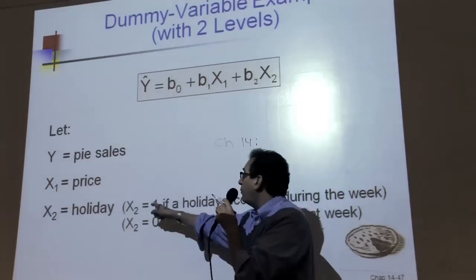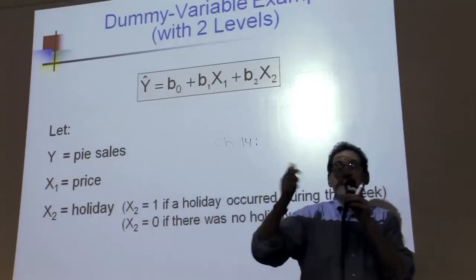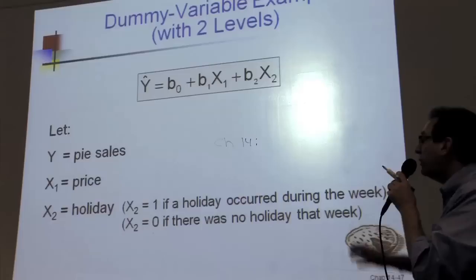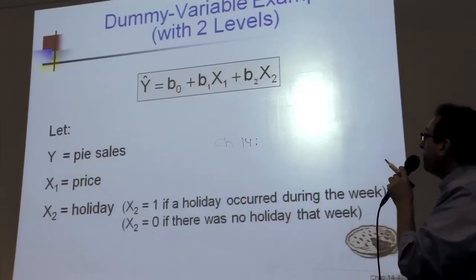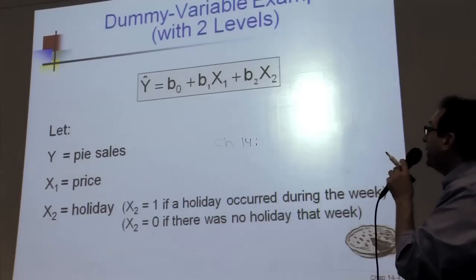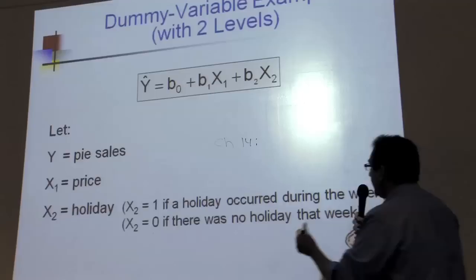And basically you can express one category as a one or a zero, it turns out any two numbers, one and two, any two numbers really, but zero and one works great, and you basically throw it into the equation when you're dealing with your columns of data.